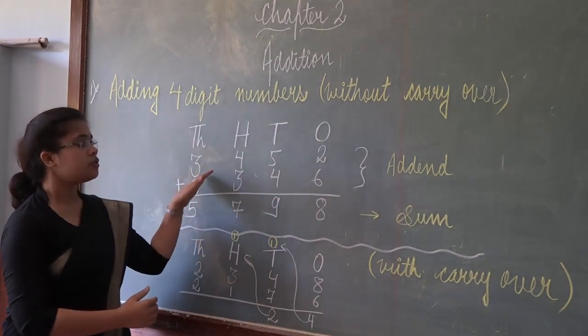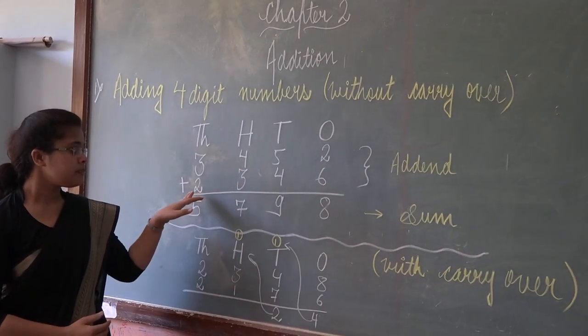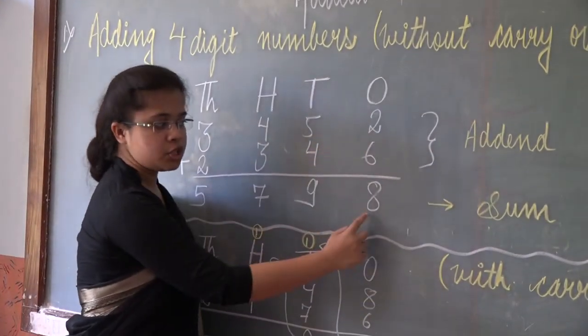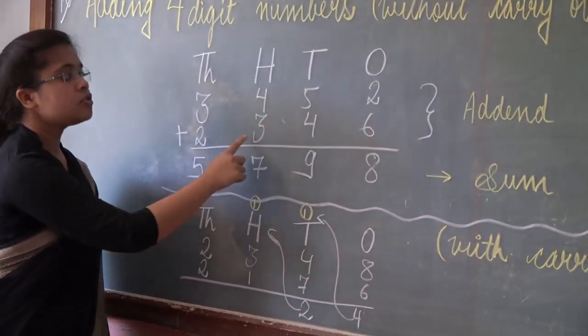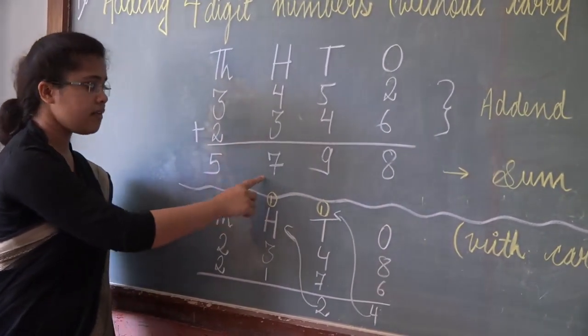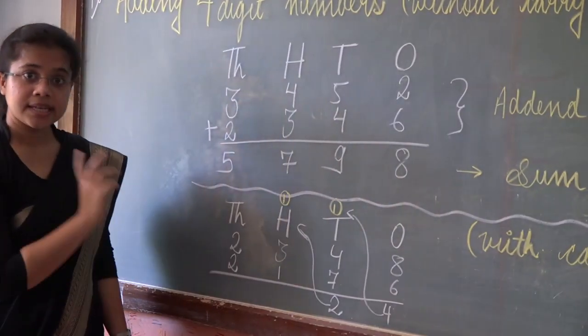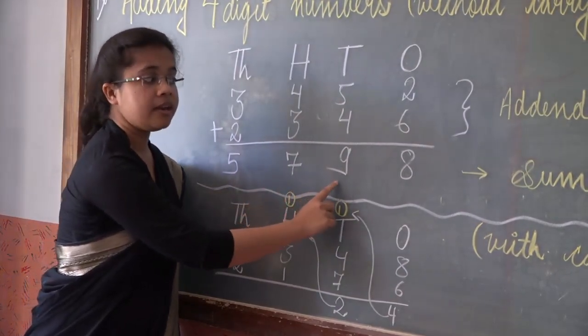These are the numbers. 3452. We need to add it with 2346. So 6 plus 2 is 8. 4 plus 5 is 9. 3 plus 4 is 7. And 2 plus 3 is 5. It means the answer is 5798.